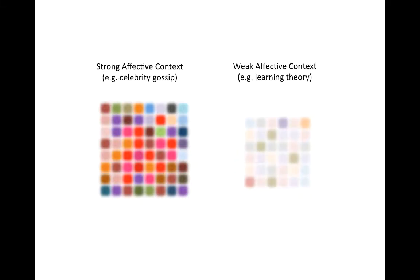Basically this gives us two situations in a learning context. One where there's something which has strong affective context — in other words, things that we really care about. It might be celebrity gossip. The majority of people don't really care very much about learning theory, so they'll forget that very quickly. But what people care about really directs their learning. What they have a strong emotional reaction to will determine what they remember.